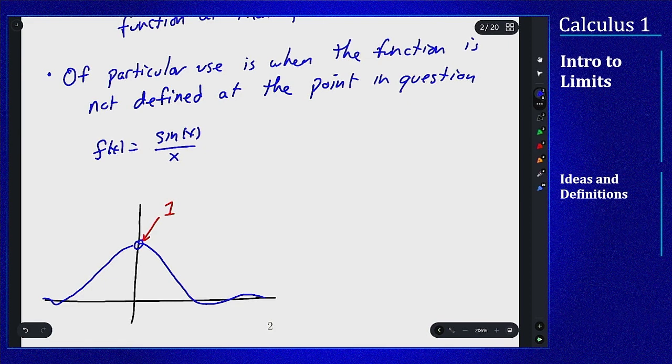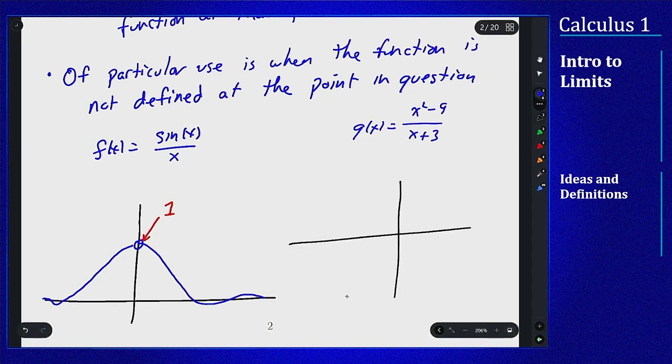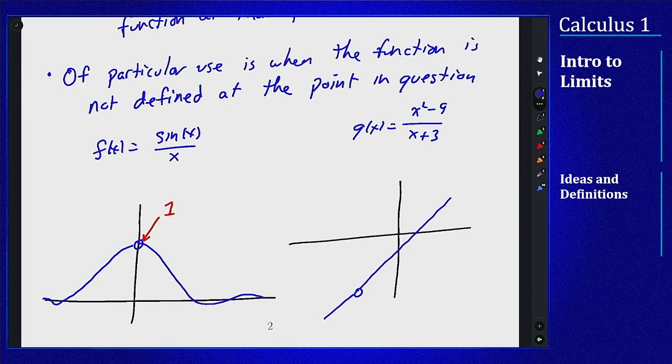The other main example is one that we've seen previously, something similar to it, where the graph of this looks like a straight line with a hole at in this case negative 3. So the limit here would look like it should be negative 6, but the function itself can't say that because it's not defined at negative 3.